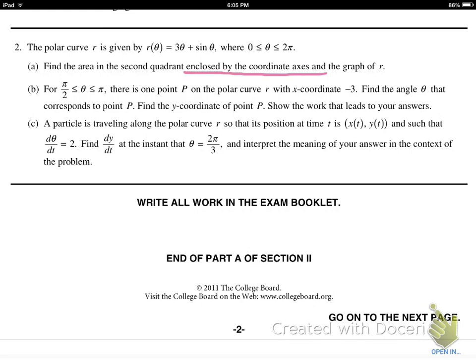It says for π/2 ≤ θ ≤ π, there is one point P on the polar curve R with x-coordinate -3. Find the angle θ that corresponds to point P. Find the y-coordinate of point P. Show the work leads to your answers. If we're looking for an x-coordinate, what we're trying to do here is translate the polar curve back to a rectangular coordinate system.